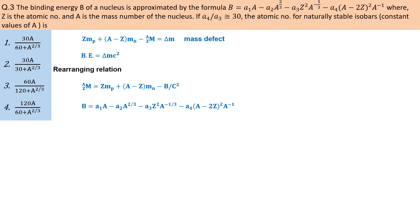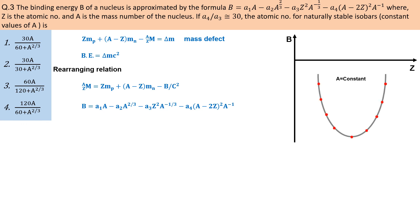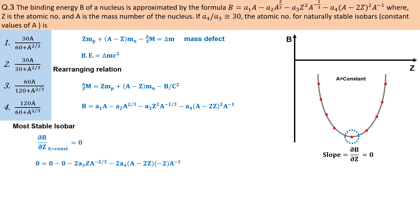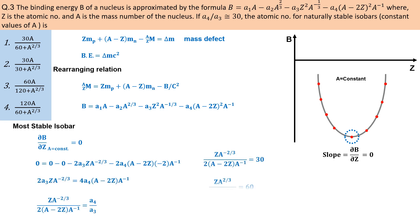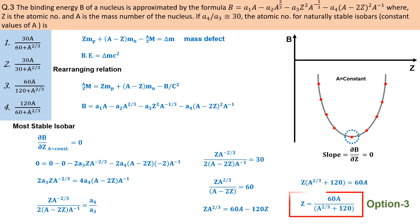Agar is formula mein mass number ko constant karte hue negative binding energy aur number of protons ke beech graph draw ki jaye to yah ek parabola ke shape ka curve banati hai. Is curve ka sabse lowest point most stable isobar ko represent karta hai. Agar is point ka slope lein to yah slope 0 ke equal aayega — means question mein given binding energy relation ka Z ke respect mein A ko constant rakhte hue differentiate karein to hamen most stable isobar ka atomic number milta hai.